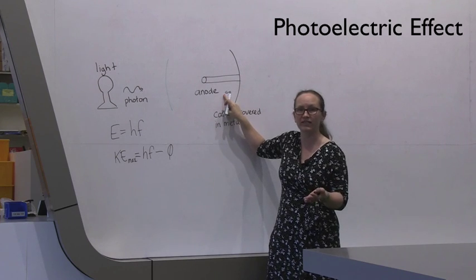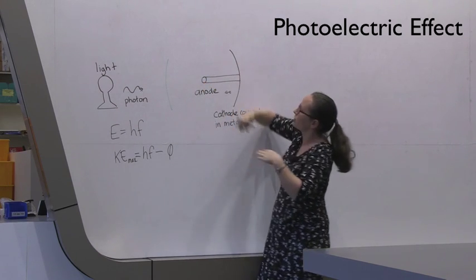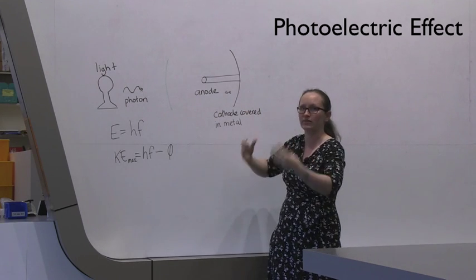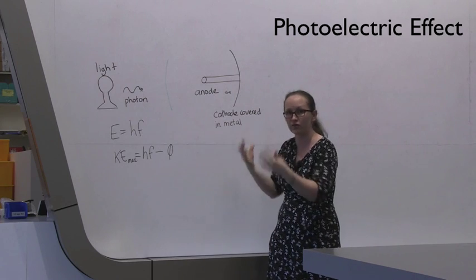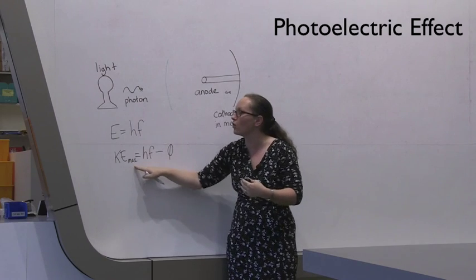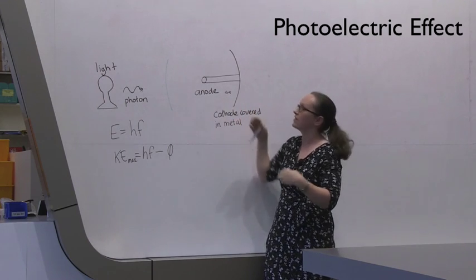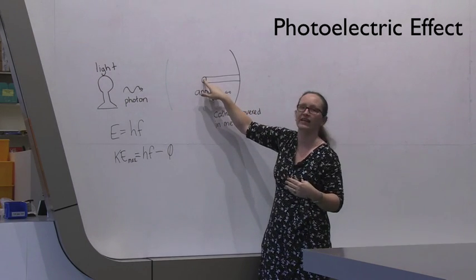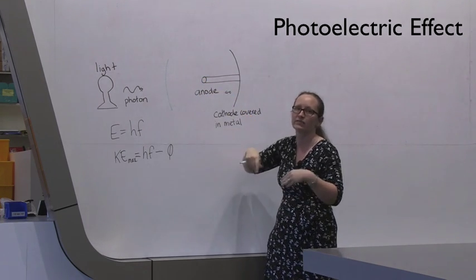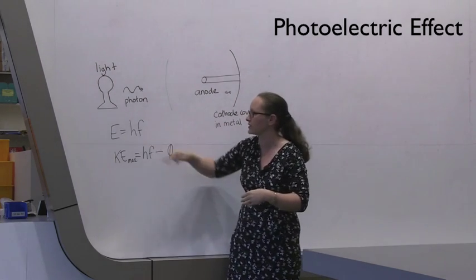What you're going to be doing during this exercise is applying a voltage difference between the anode and the cathode. And to overcome this voltage difference, the electron is going to need a certain amount of energy. And as you increase that voltage difference, the energy is going to be more and more. And when you need more than this maximum kinetic energy to overcome that voltage difference, then you're going to not get a photocurrent anymore. So you're going to be making measurements of the photocurrent and observing when the photocurrent stops for different frequencies of light.